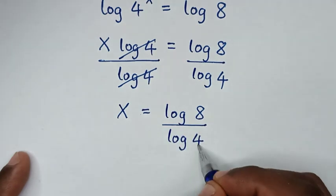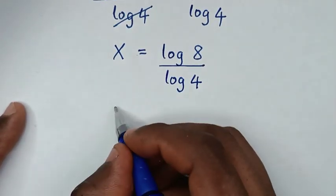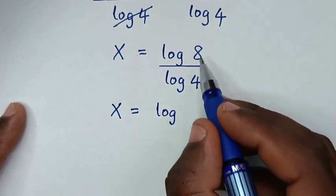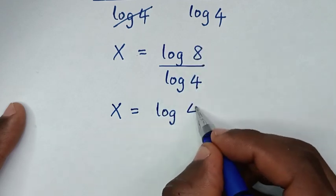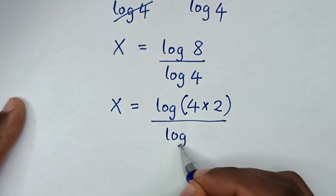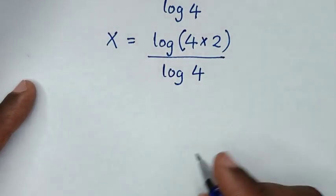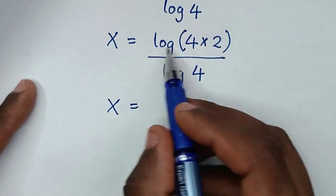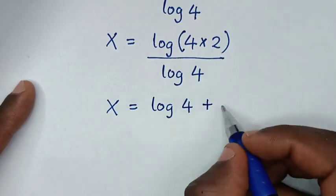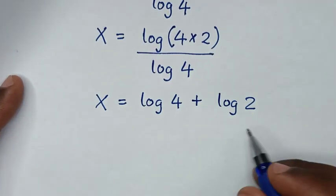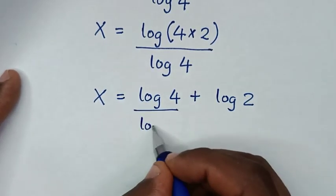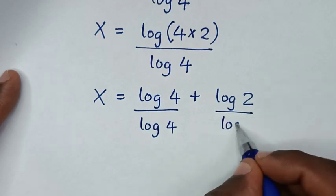Then in the next step, x is equal to log of 8 over log of 4. Now 8 is the same as 4 times 2, so it will be log of 4 times 2 in the bracket over log of 4. Then log of 4 times 2 is the same as log of 4 plus log of 2, all divided by log of 4. We divide each part by log of 4.